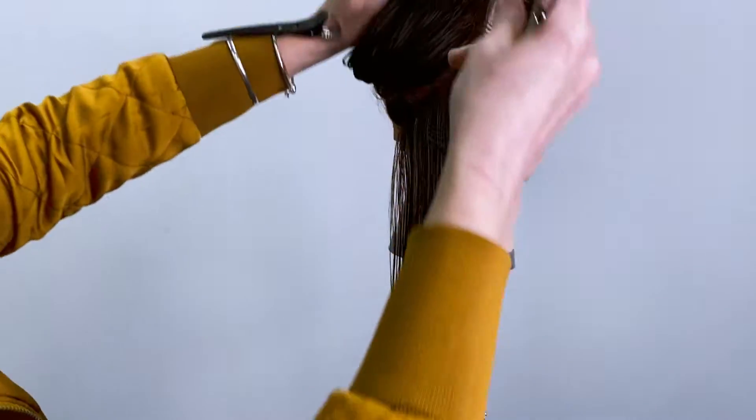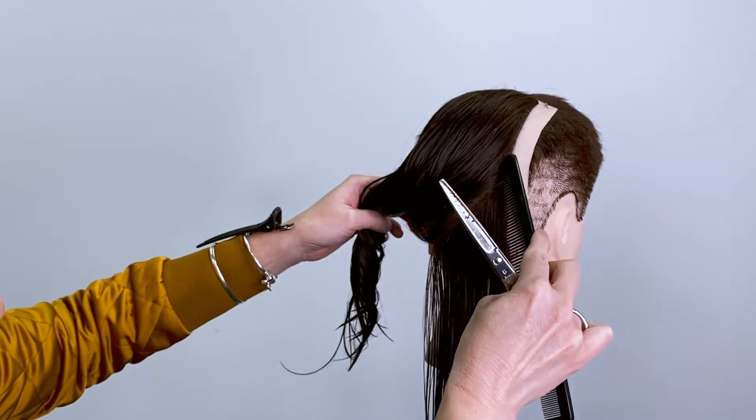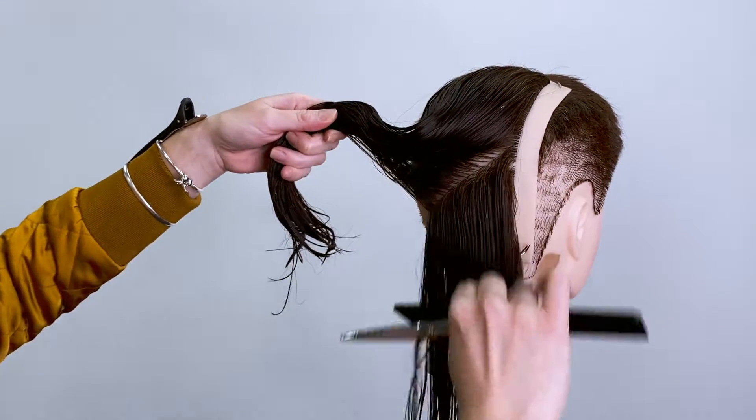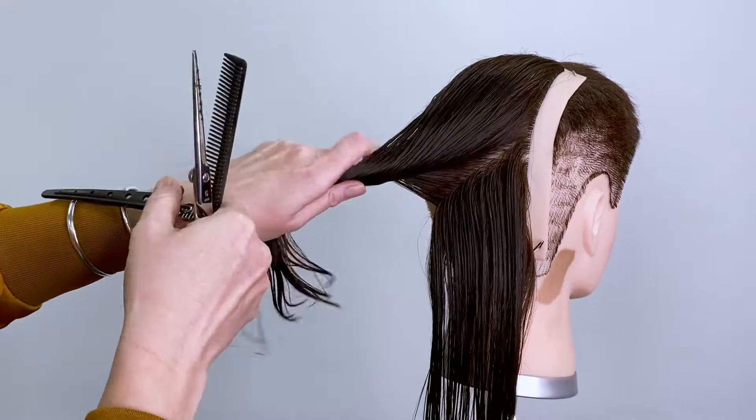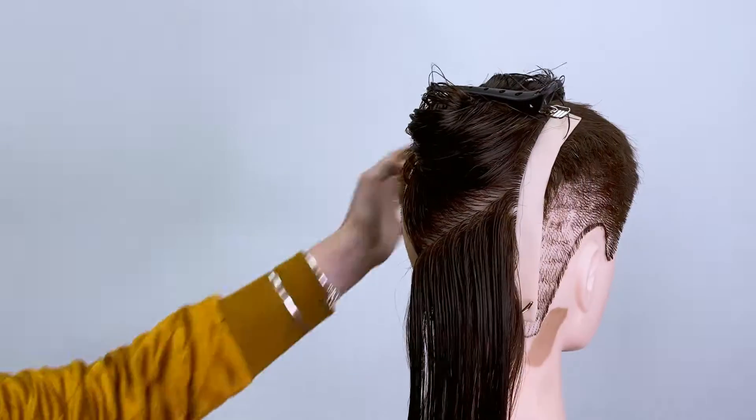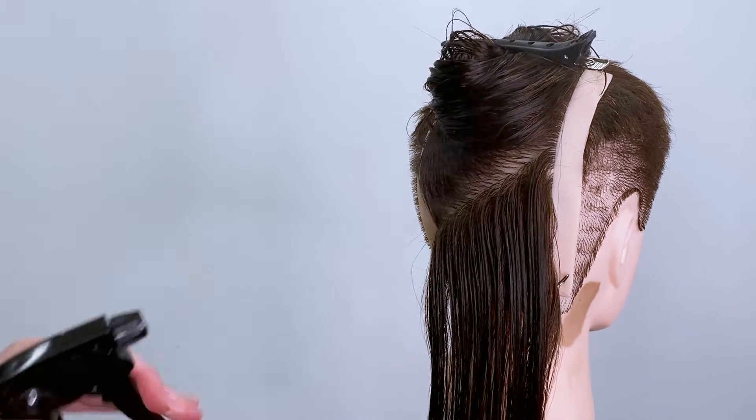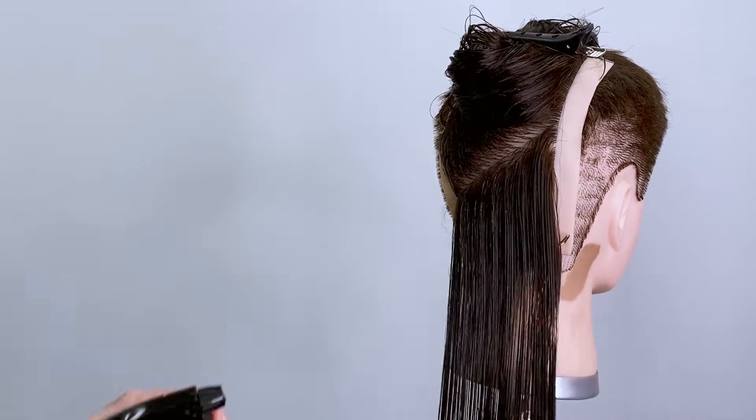Then we're going to keep going. The next thing we're going to do is take another section because this is a little bit more precise. Take your sections just a little bit finer, that way you can see what you're doing easily. I'm going to wet her down. You can see it's starting to dry out a little bit.